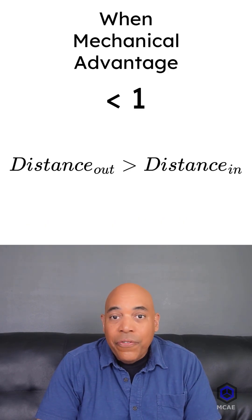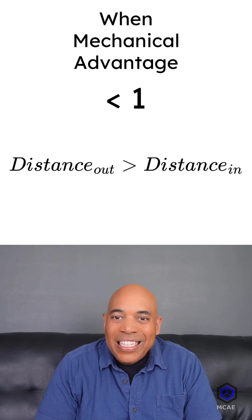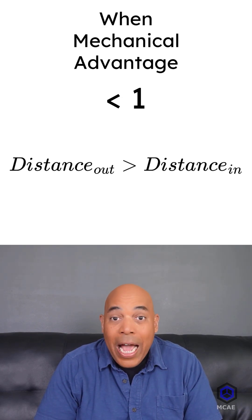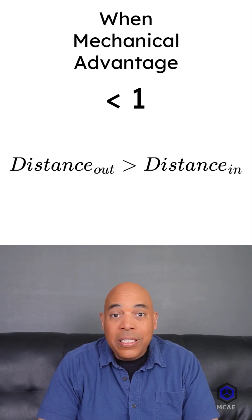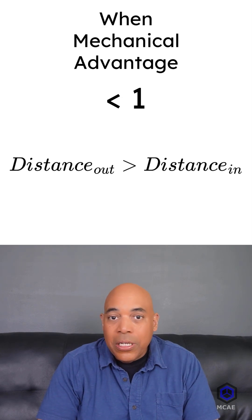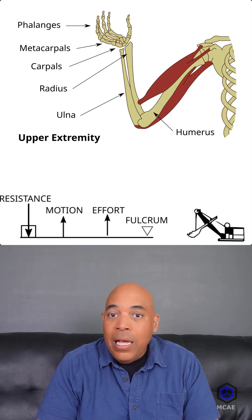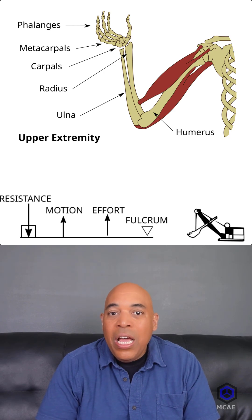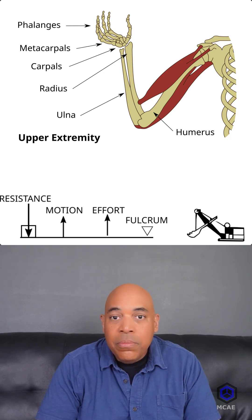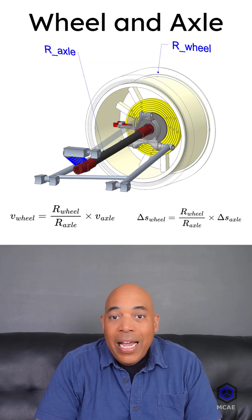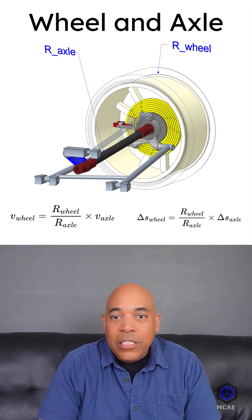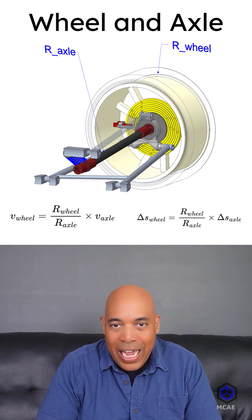If the mechanical advantage is less than 1, then you are getting more output distance than input distance. Examples include a lever where the effort is applied between the fulcrum and the load, and a wheel and axle where the effort is applied to the axle.